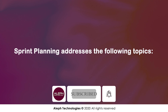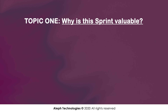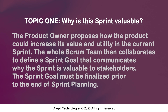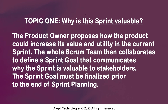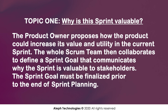Sprint planning addresses the following topics. Topic 1: Why is this sprint valuable? The product owner proposes how the product could increase its value and utility in the current sprint. The whole Scrum team then collaborates to define a sprint goal that communicates why the sprint is valuable to stakeholders. The sprint goal must be finalized prior to the end of sprint planning.